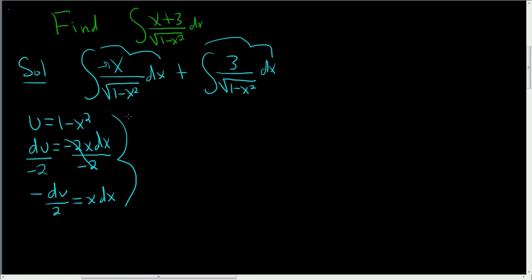At this point, we're ready to make the substitution into the first integral. We have -1/2, pulling out the -1/2, integral du over the square root of u.